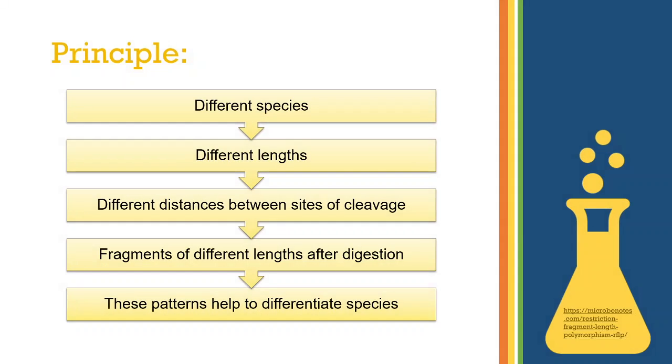RFLPs are unique in different species and hence their lengths would be varying. The distance between the two sites of cleavage are different for different organisms and thus, when digested by restriction enzyme, they would create fragments of different lengths. The similarity and differences of these patterns thus generated can be used to differentiate species or even strains from one another.